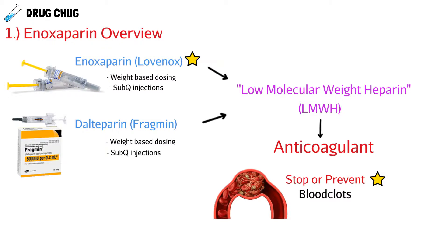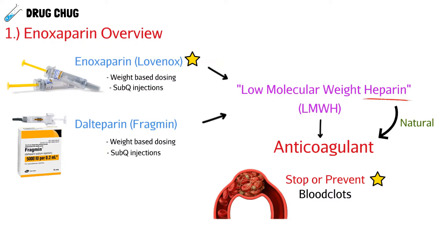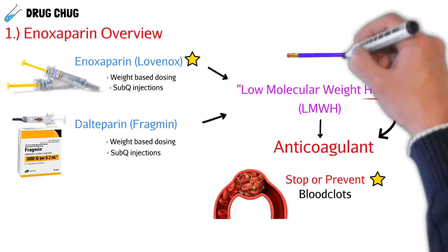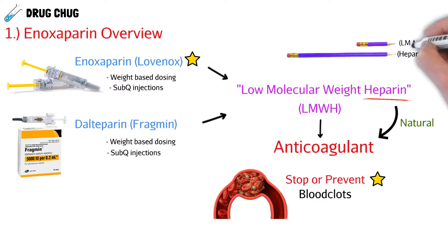We said both are low molecular weight heparins. What you need to know is that heparin is a natural anticoagulant that our body already produces — heparin floats around endogenously to help prevent blood clots on a regular basis. These drugs are based off the natural heparin we already have; they took heparin and made the molecule shorter, hence low molecular weight heparin.